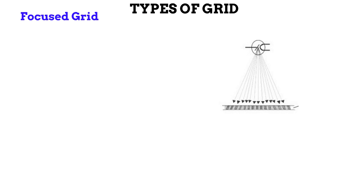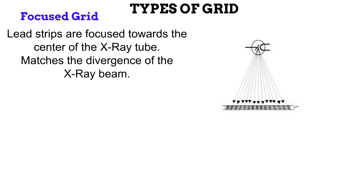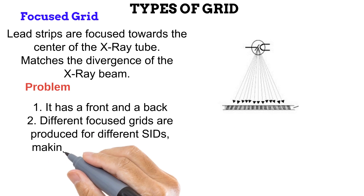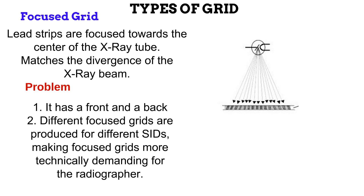The next type of grid is the focused grid. In this, the lead strips are not parallel to each other. Instead, they are tilted so that every lead strip is focused towards the center of the X-ray tube. This way, the divergence of the X-ray beam is matched, with less peripheral geometrical cutoff. However, focused grids have their problems. First, it has a front and a back, meaning the radiographer must pay extra attention to avoid placing it upside down. Secondly, different focused grids are made for different source-image distances, and if the wrong SID is used, geometric cutoff is produced. Using focused grids requires more carefulness and expertise than using parallel grids.